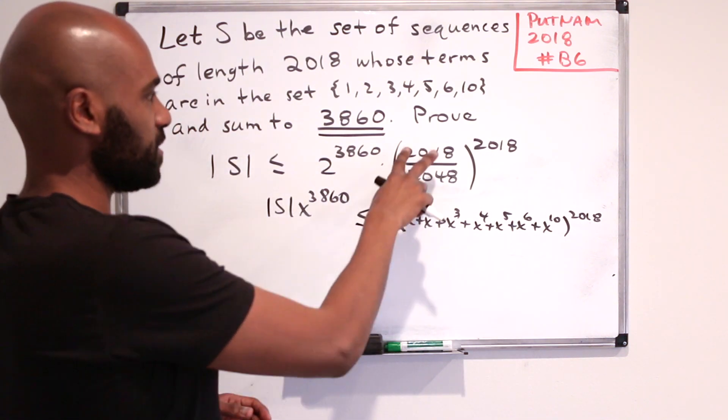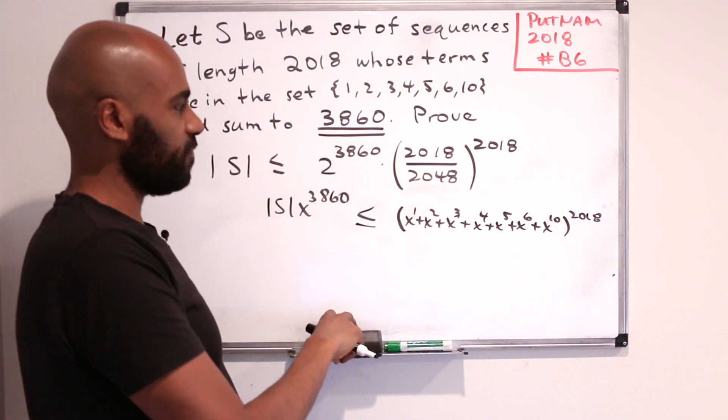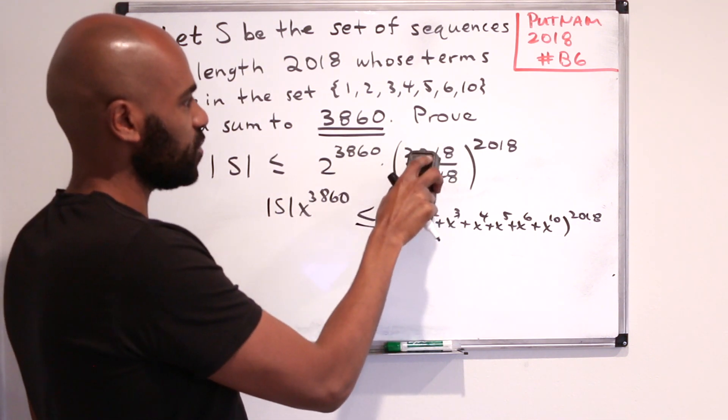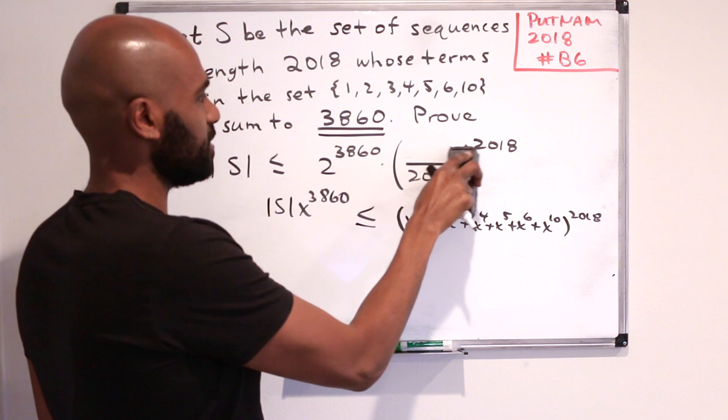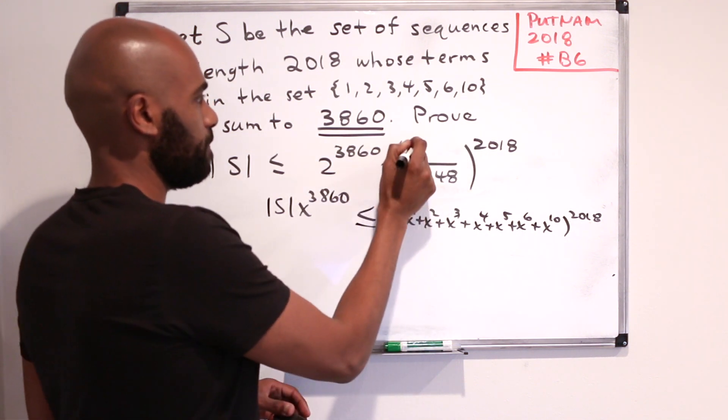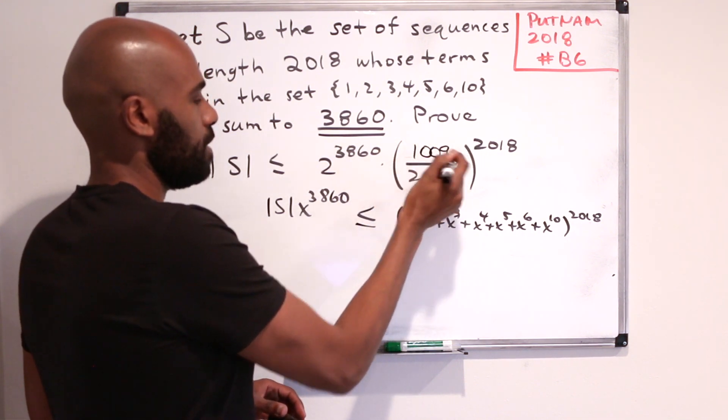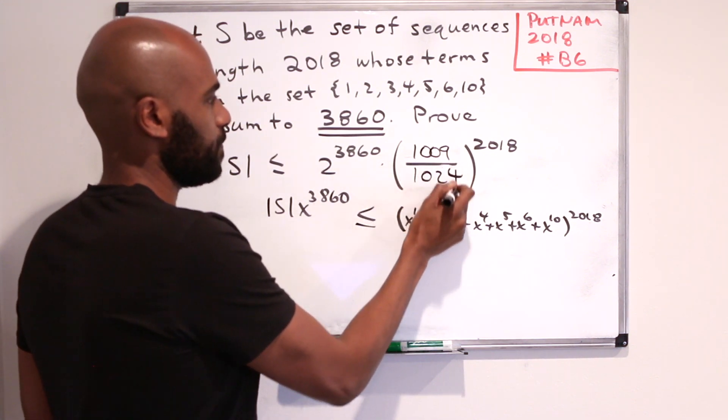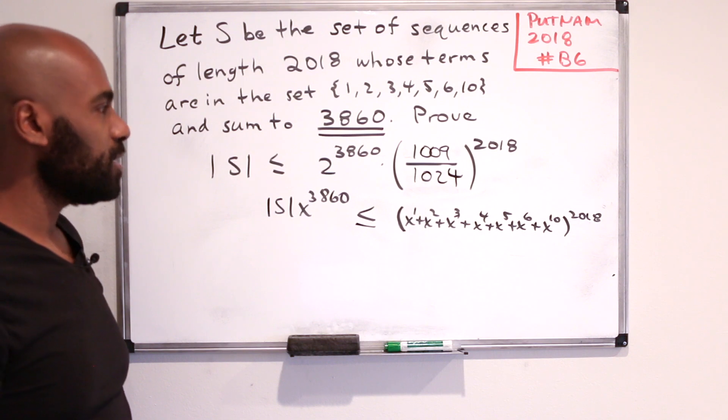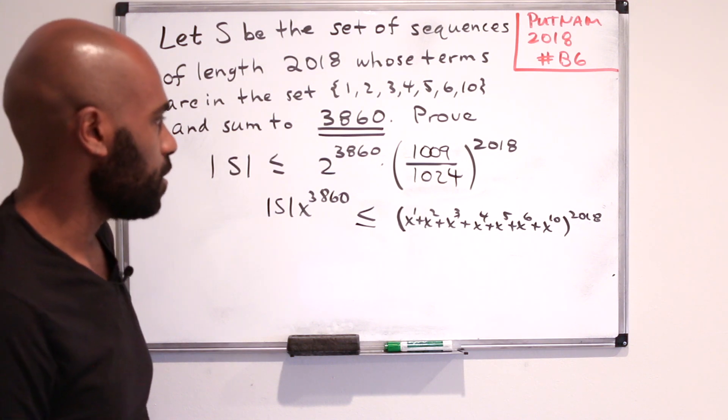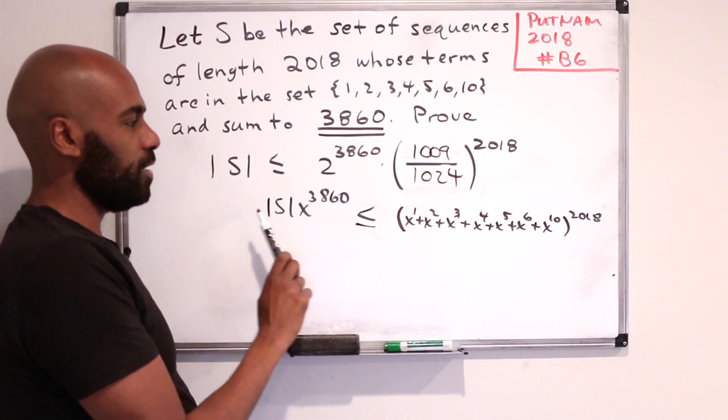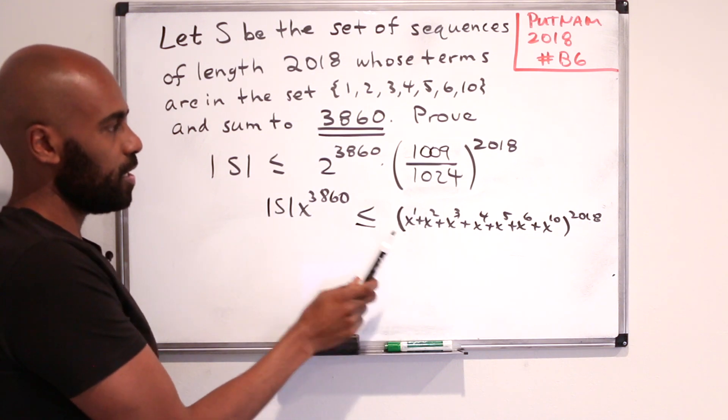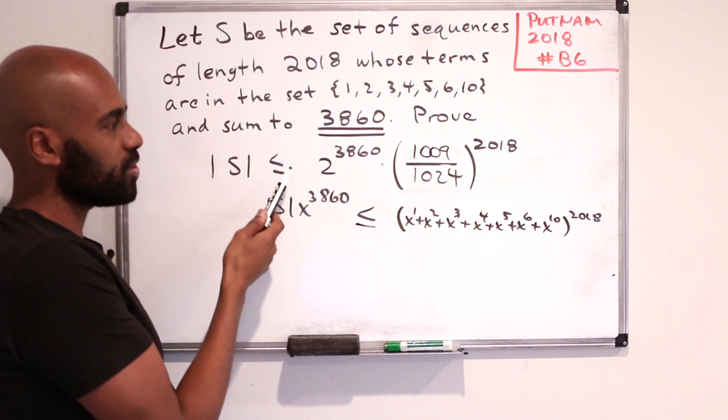So the first thing I want to do actually is simplify this a bit. So we have a 2018 over 2048, we can divide by 2, we'll get 1009 on the numerator here, and 1024 over here. So we notice that there's something interesting going on here. Like, you might think, why write an inequality like this in the first place?